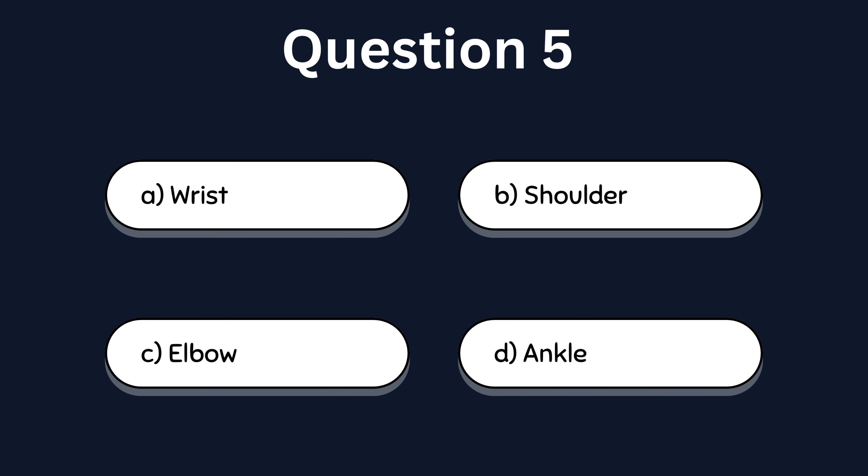Question 5. Which word is the odd one? The word ankle is the different one, because all other words are part of the arm.